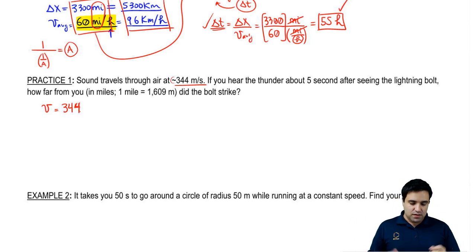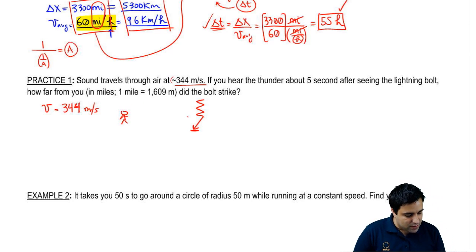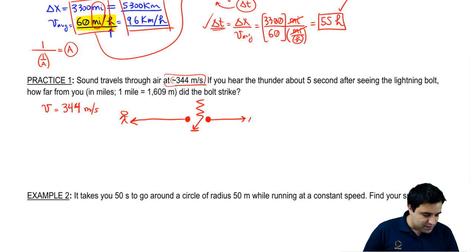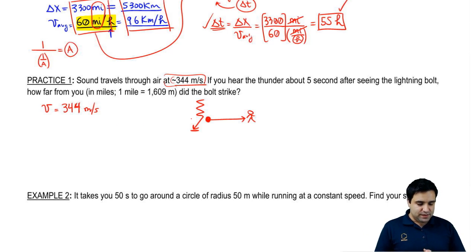But I'm just going to write v, constant average. You hear thunder about five seconds after seeing lightning bolt. So here's the idea. You're here. Lightning strikes here. And lightning causes thunder, but air travels way slower than light. So it takes a little while for this guy to get here to you.